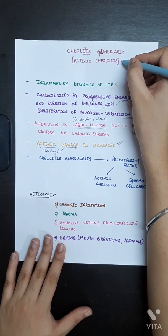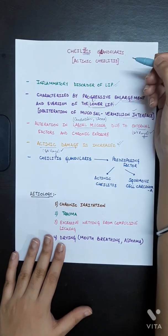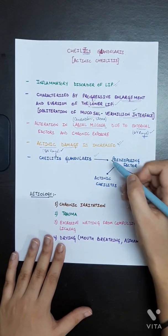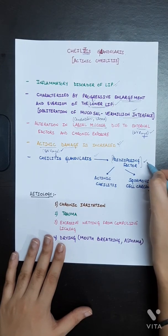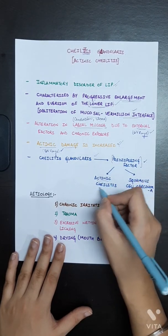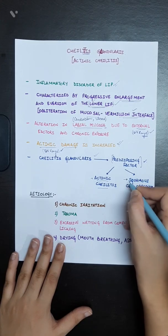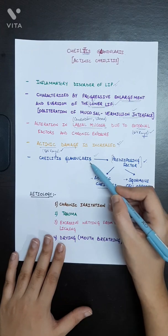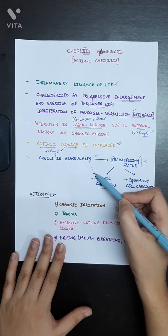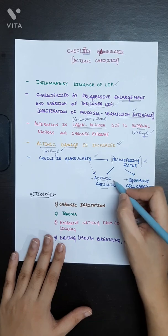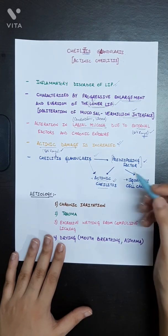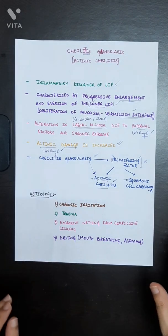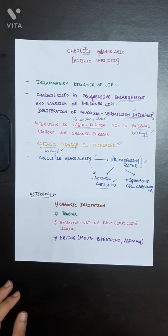Due to increased actinic damage, alteration in labial mucosa takes place, and Cheilitis Glandularis can turn into Actinic Cheilitis — that's why it is also called Actinic Cheilitis. Cheilitis Glandularis is basically a predisposing factor for both Actinic Cheilitis and Squamous Cell Carcinoma due to environmental factors, external factors, or trauma.